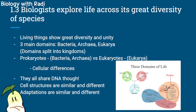One key difference is that prokaryotes do not have a nuclear envelope, while eukaryotes do. That will be covered more in the cell organelle chapter. However, they also share similarities — for example, they all share DNA. Cell structures can be similar and different between organisms, and adaptations to different environments can also be similar or different depending on the environment's conditions.